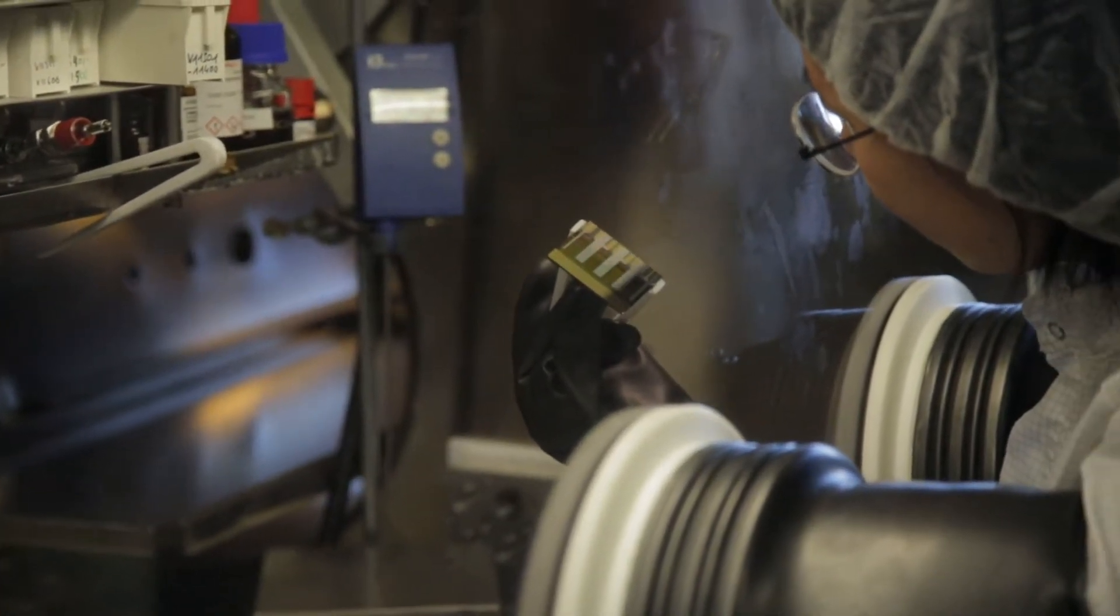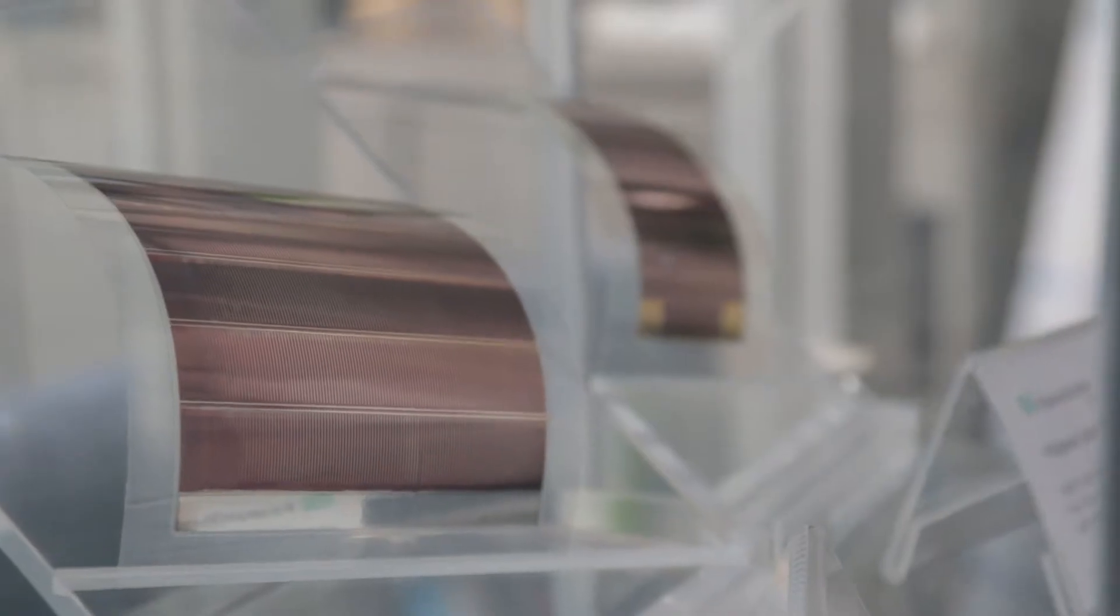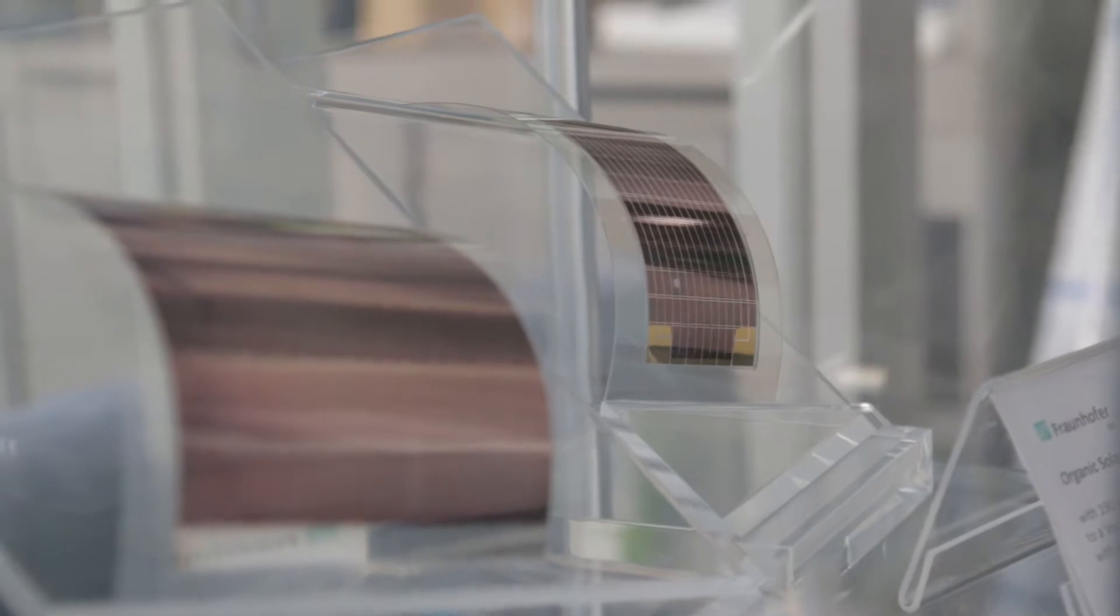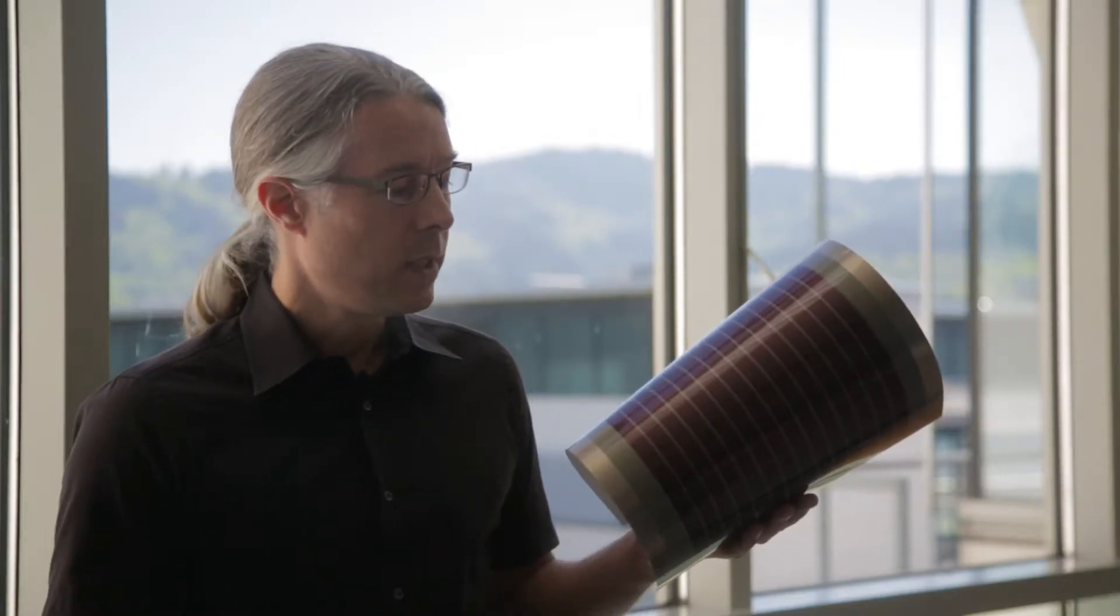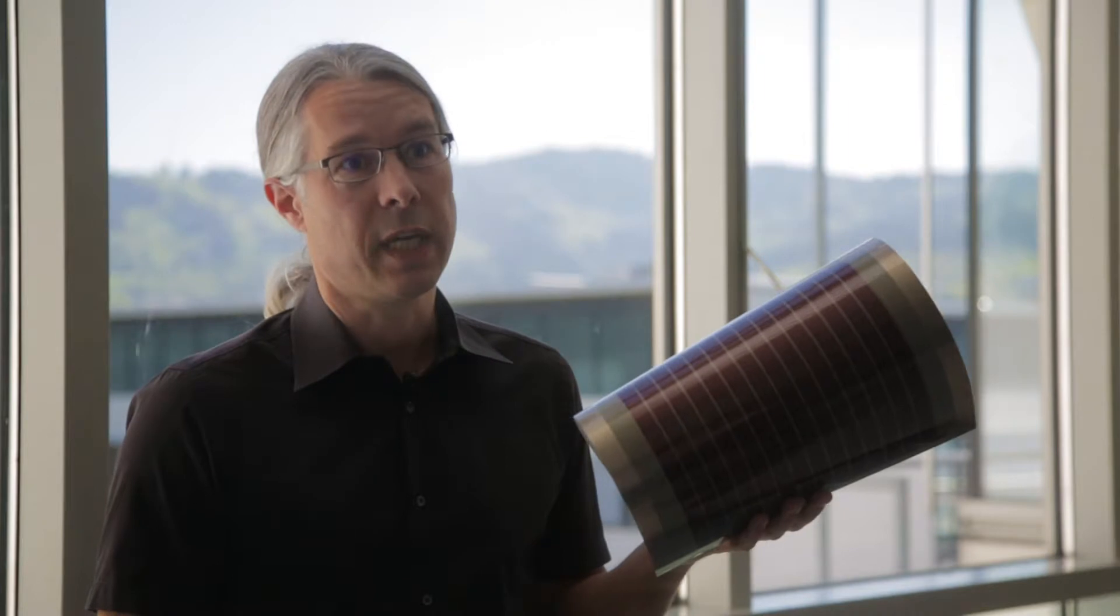This is an organic solar module and the difference is that the photoactive layer is composed of organic materials. They can be processed from solution at room temperature which allows you to use plastic substrates. Another advantage is that you can use a continuous coating process based on a roll-to-roll processing which is also the reason why there could eventually be a much lower price for this kind of application.